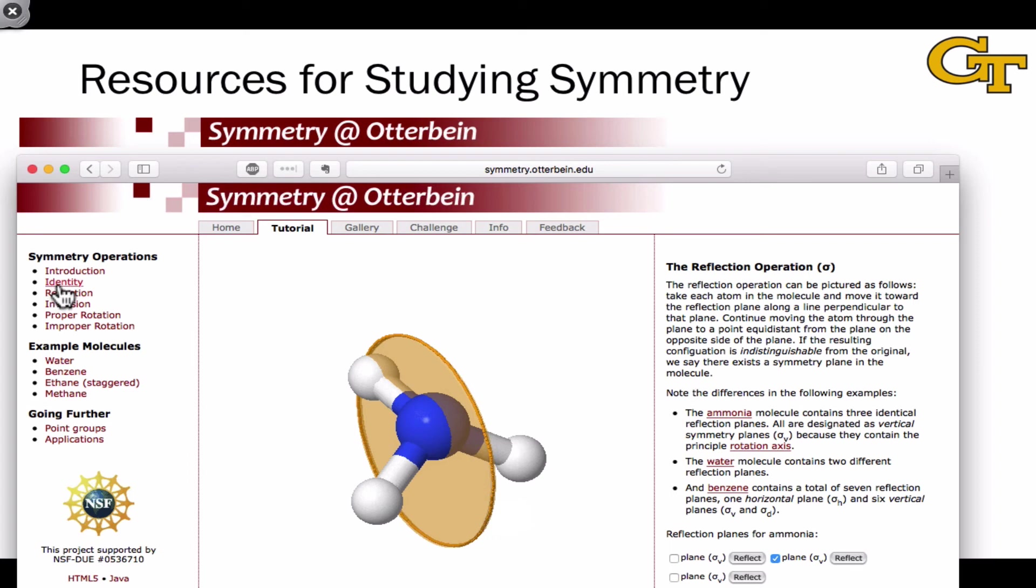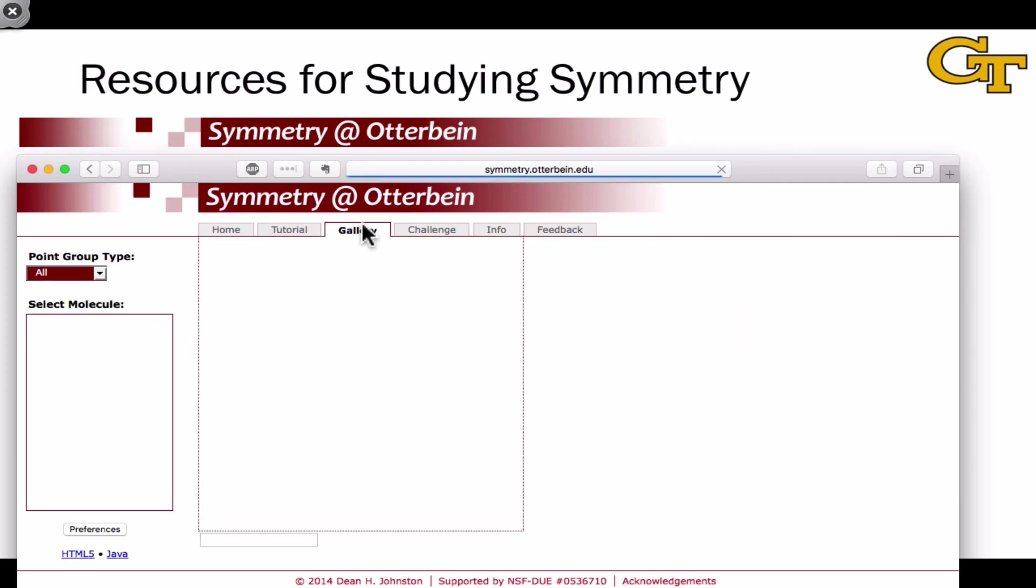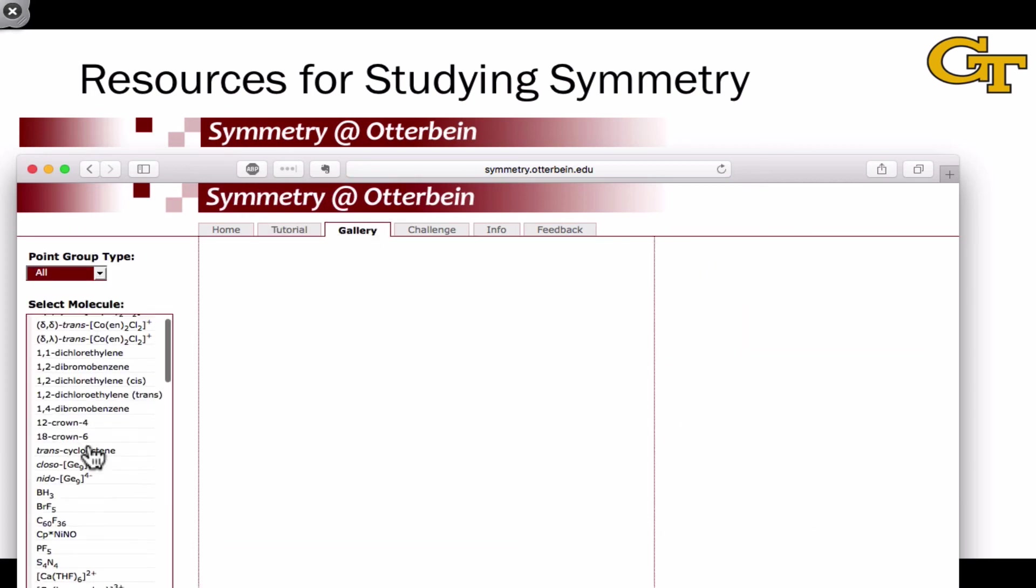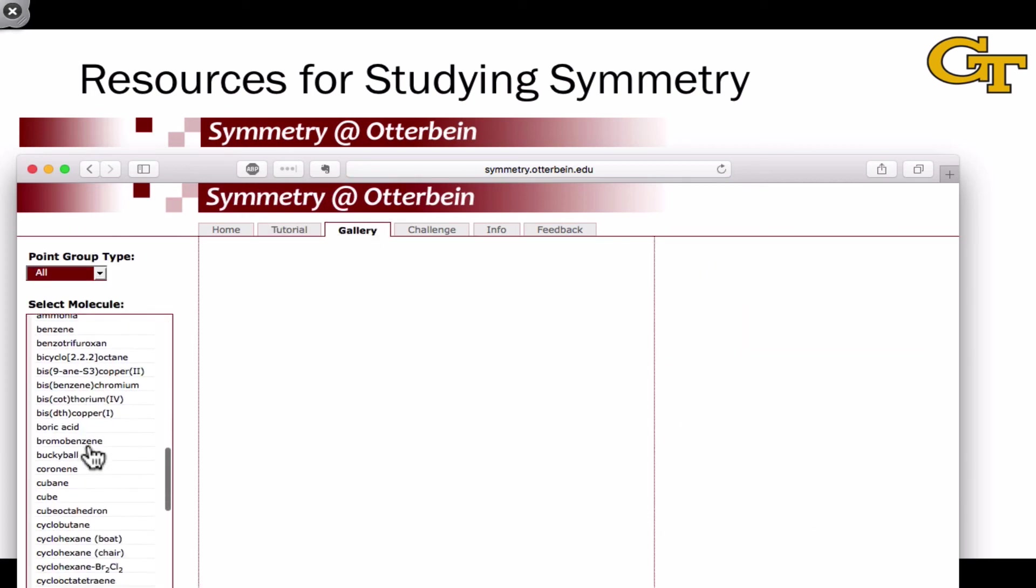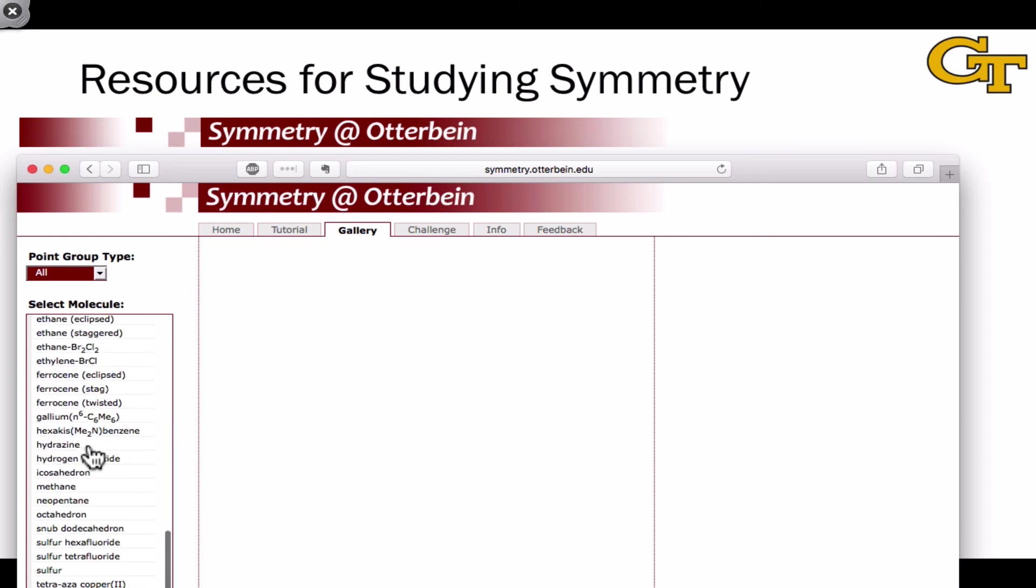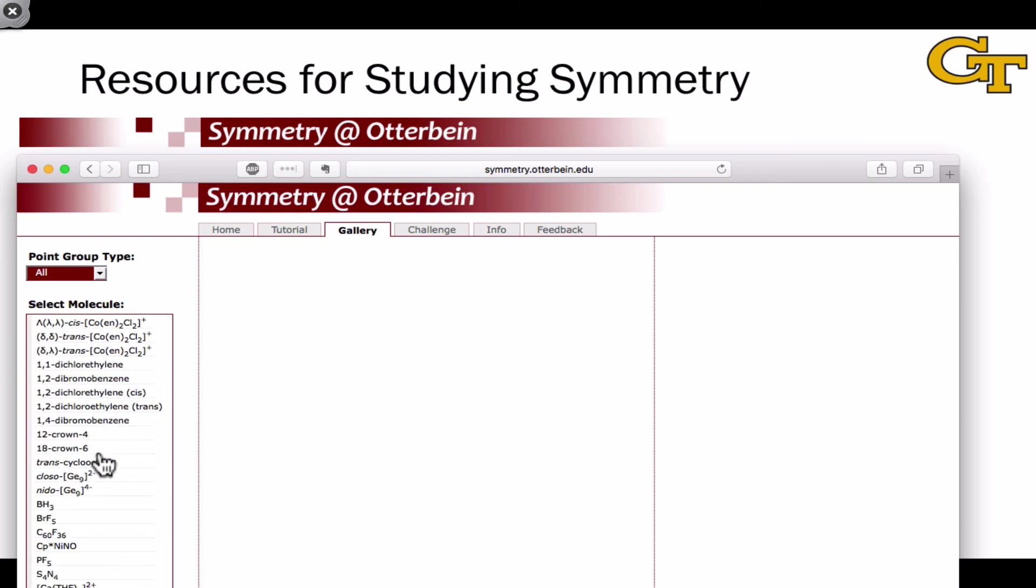This tutorial covers everything from the identity, which involves doing nothing and is needed for having a complete system of symmetry operations, all the way through the different types of rotations, which are beyond the scope of Chem 2311. If you're familiar with the symmetry elements on some level, but you just want additional practice identifying them in molecules, the gallery is a large collection of molecules, both organic and inorganic, with all of their symmetry elements and operations displayed.